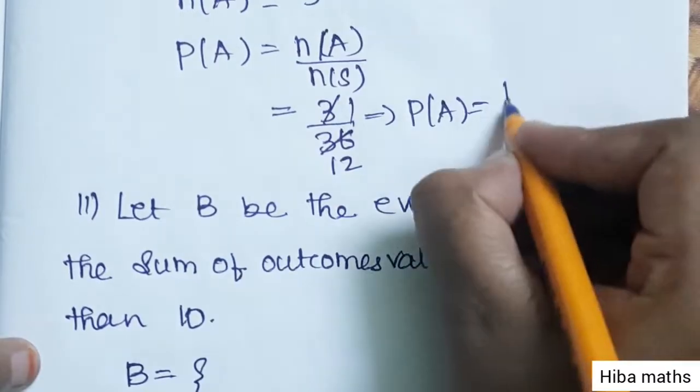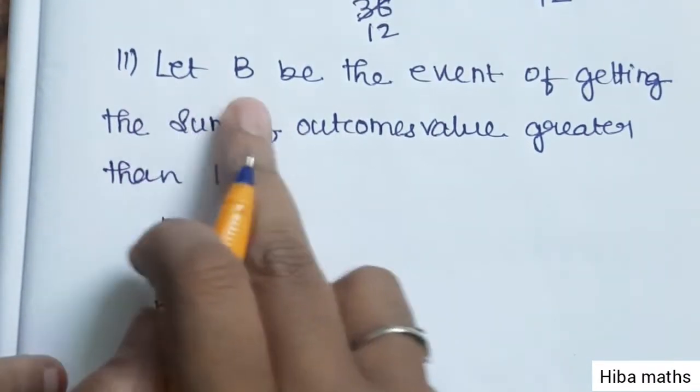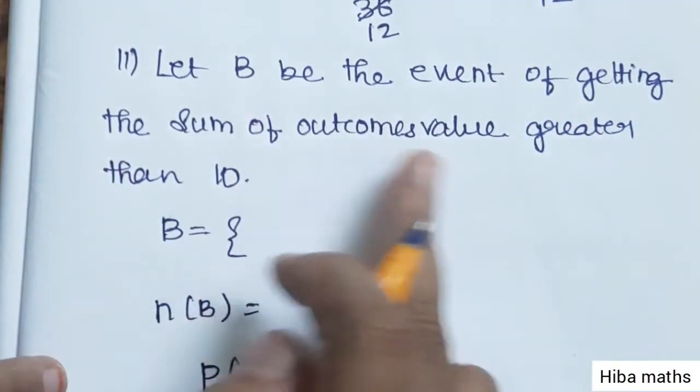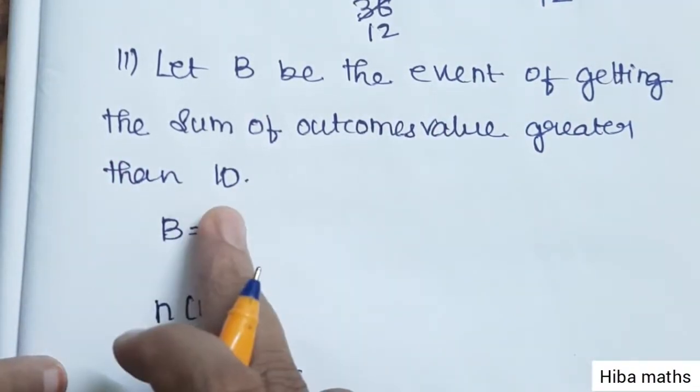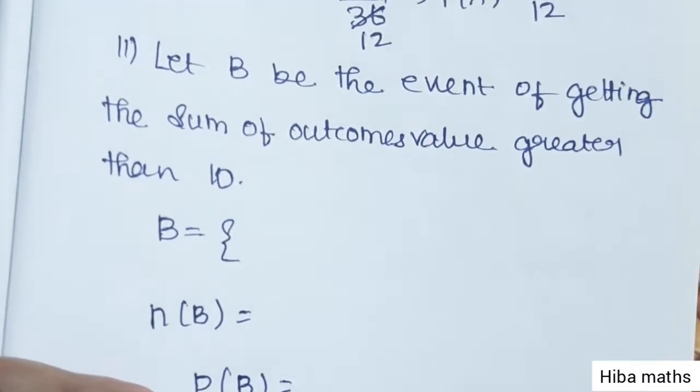So P(A) = 1/12. Part (ii): Let B be the event of getting the sum of outcome values greater than 10.